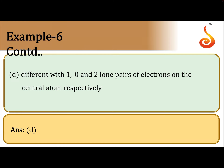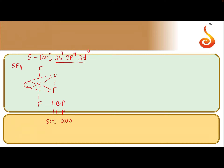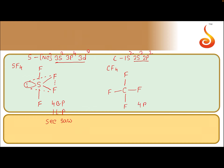Next, for CF4, carbon is the central atom. Its electronic configuration is 1s2 2s2 2p2. Carbon can have four unpaired electrons, and with these it forms four bonds with four fluorine atoms. Around carbon there are four bond pairs and zero lone pairs, so the shape of CF4 is tetrahedral.